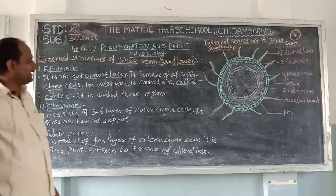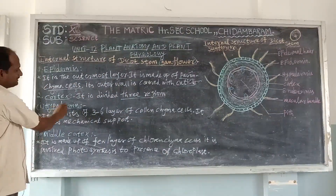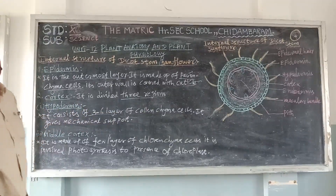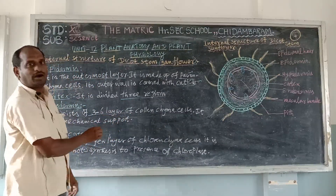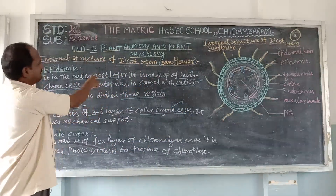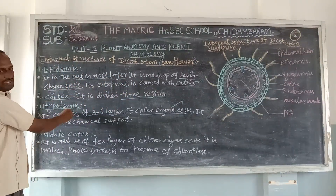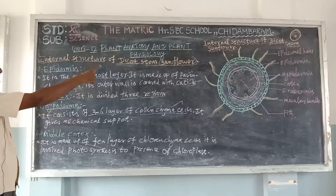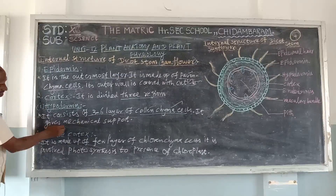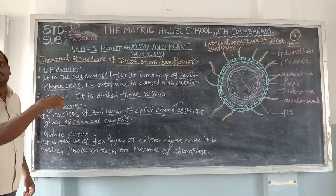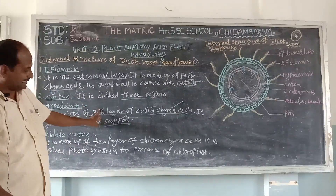The next layer is the cortex. Cortex is divided into three regions. The first region is hypodermis, which is the outermost layer of the cortex. Hypodermis is three to six layers made up of collenchyma cells — unlike the epidermis, which is made up of parenchyma cells. The function of the hypodermis is mechanical support for the plant.